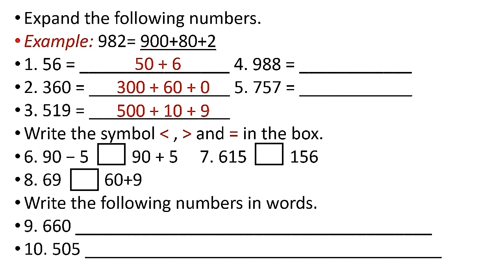5 is in the hundreds place. How about number four, 988? You have to write it this way: 900 plus 80 plus 8. How about number five, 757? It's very easy — just write 700 plus 50 plus 7. Now, write the symbol less than, greater than, or equal in the box.